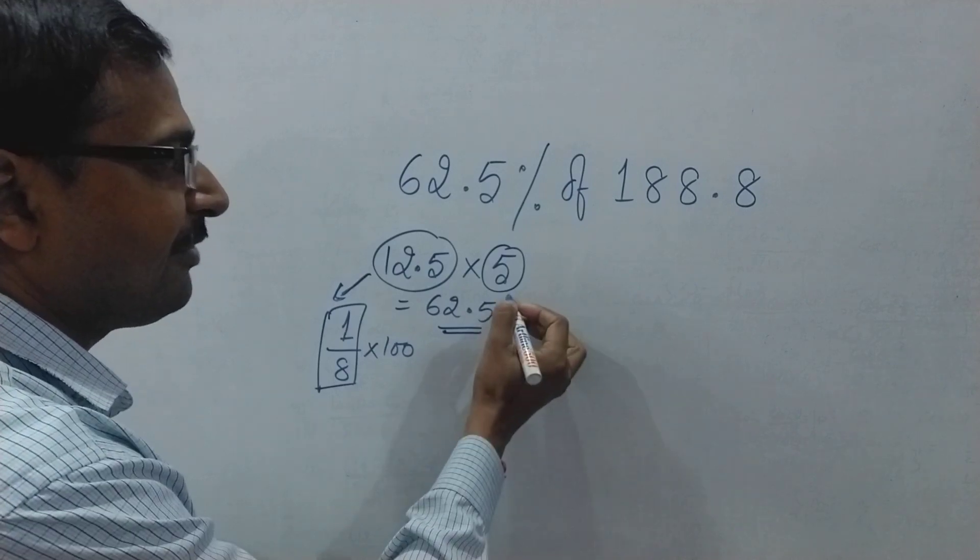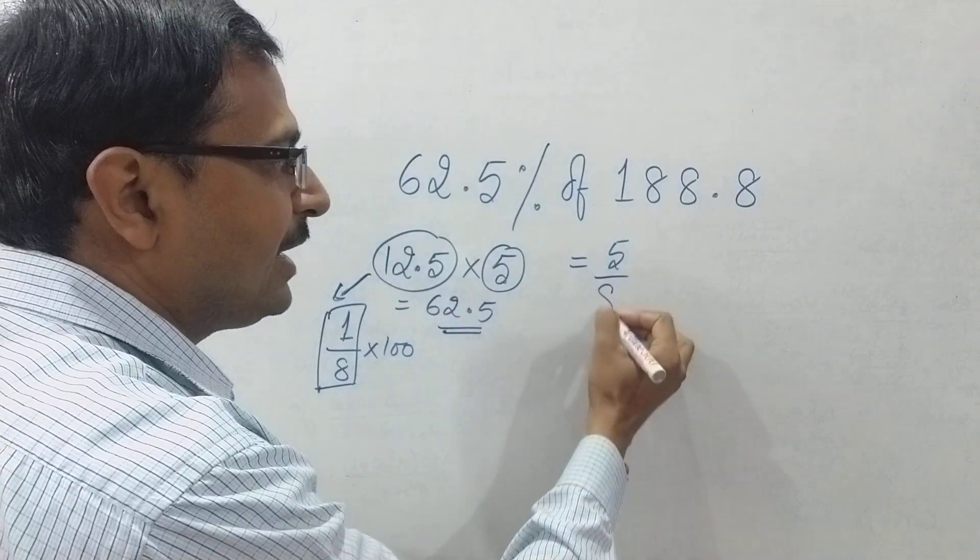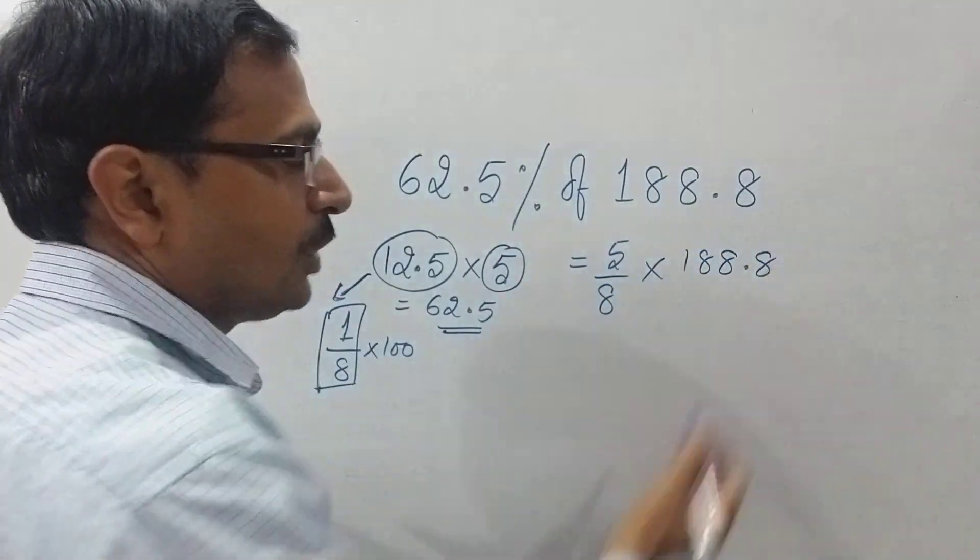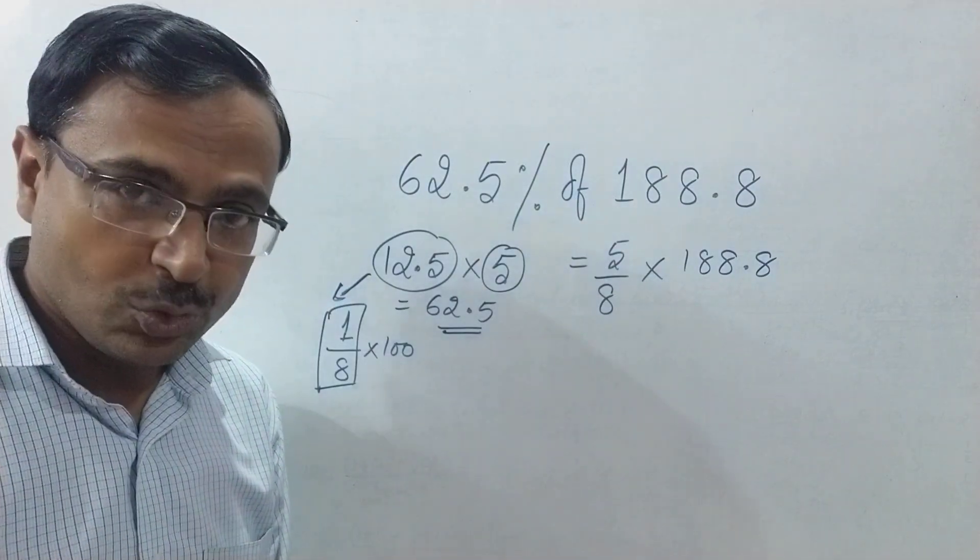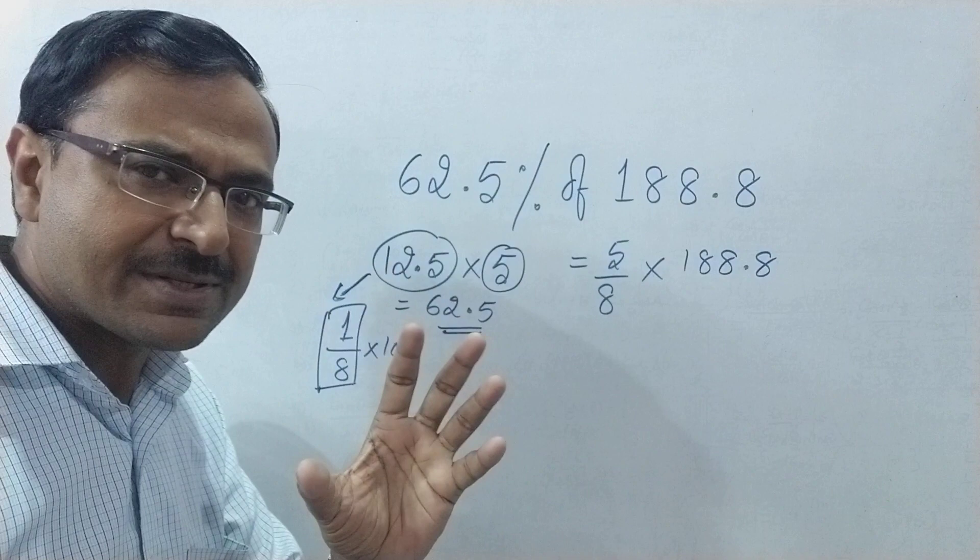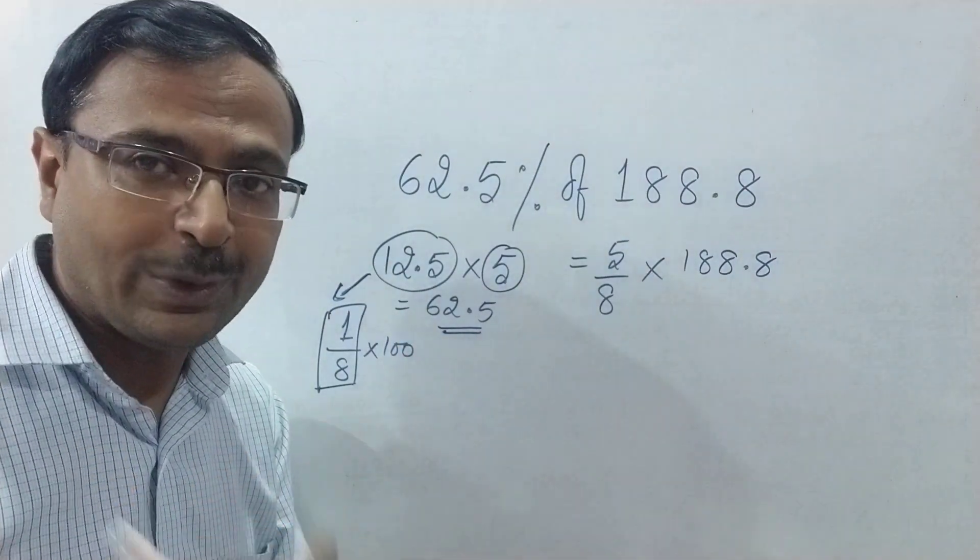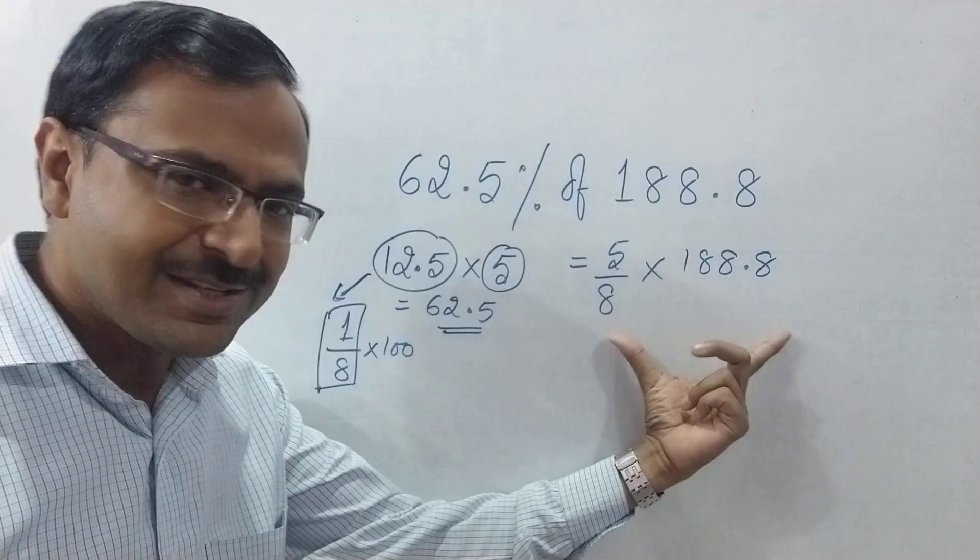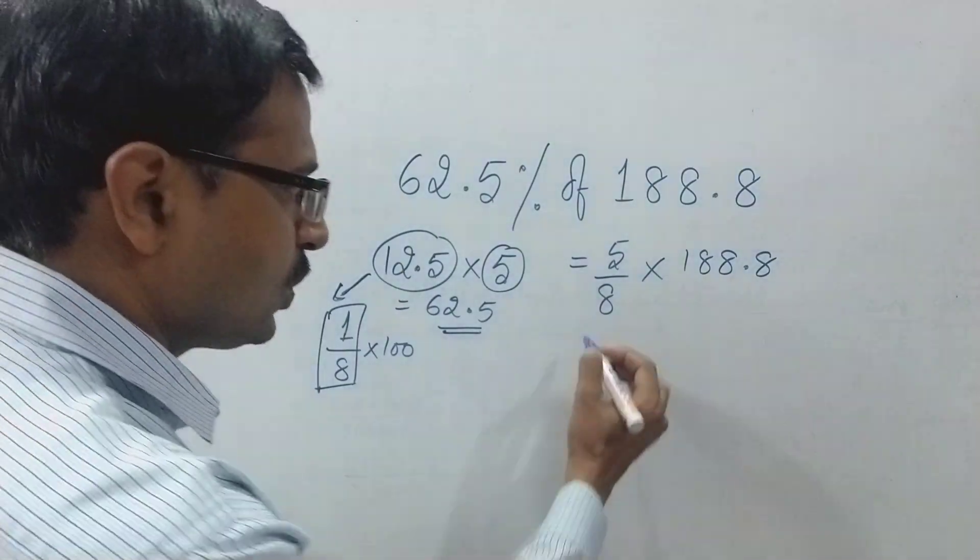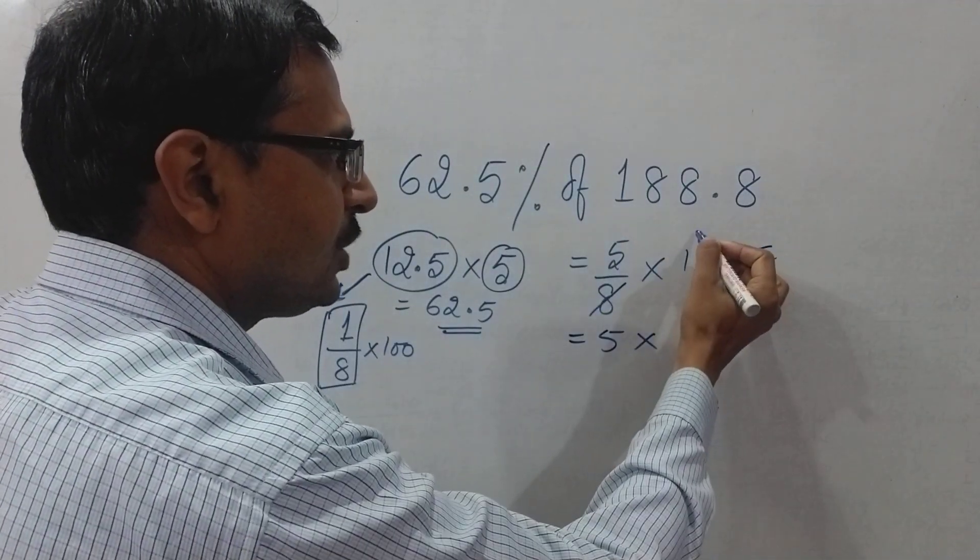So actually we have to find 5/8 of 188.8. Now this is a useful skill that you need to convert some standard percentages in the form of fractions very quickly. If you can do this, then remaining steps are very easy. So 5 times...